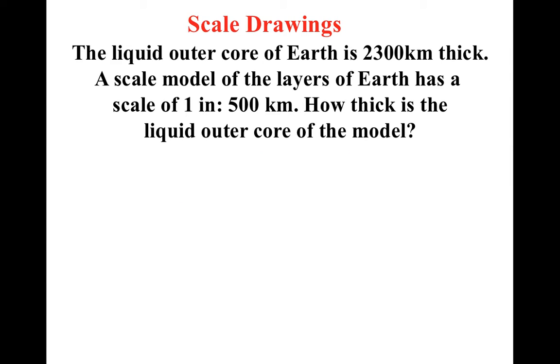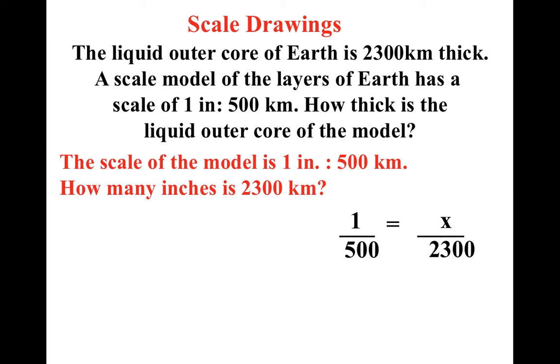Alright, the liquid outer core of the earth is 2,300 kilometers thick. The scale model of the layers of the earth has a scale of one inch to 500 kilometers. How thick is the liquid core of the model? Ah, you know, that sounds confusing in the very beginning. However, if I set up the proportion, check out how easy it is. Notice I have the model in inches and I have the real world in kilometers. One inch equals 500 kilometers. So they line up and they match up. And the 2,300 goes down here because that's also kilometers. And the I don't know is in the numerator because that's the inches. Do you see how using the proportion can help make a confusing problem suddenly look remarkably easy?